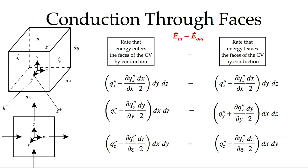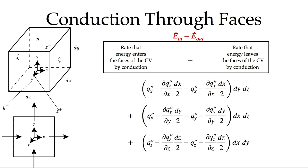Adding the energy-in and subtracting the energy-out terms, we notice that in each pair of faces the center flux values cancel. What remains is the spatial derivative term: for x, we get minus (dx/2) subtracted from another minus (dx/2), combining to give a full dx. Combined with the face areas — the x-derivative multiplies DY·DZ, the y-derivative multiplies DX·DZ, and the z-derivative multiplies DX·DY — each term produces the full volume DX·DY·DZ. So the net conduction term becomes minus the sum of spatial derivatives of heat flux components, all multiplied by the volume.